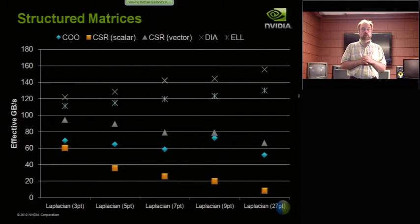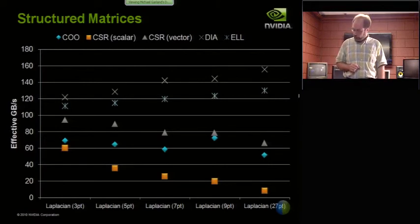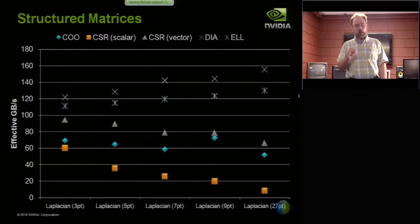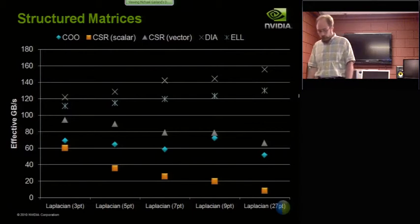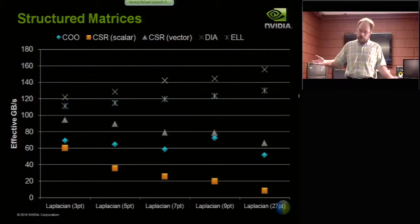So this is a structured matrix data set. It's a synthetic data set, which is just constructed from Laplacian stencils on regular grids. And if you look at the bottom, each one of them is labeled like 3.5 point. That's the size of the stencil. And so, hence also the number of diagonals in the matrix. So as you go from left to right, you have matrices with increasing numbers of diagonals.